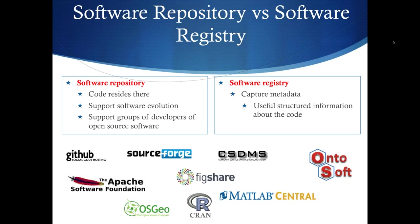GitHub is a good example of a repository where you put the software. It supports versions and a group of developers, but doesn't ask for much in terms of describing your code — just a readme file, license, and contributors. MATLAB Central lets you put more detailed descriptions. CSDMS, a geosciences repository for models, has quite an extensive set of metadata you can attach to software.